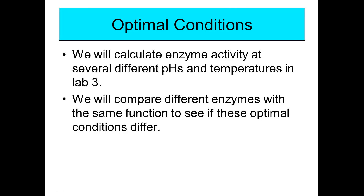Besides calculating unit activity, in lab three we determine the optimal conditions for the enzyme. We calculate the enzyme's activity at several different pHs — 5, 6, 7, 8, and 9 — and figure out which produces the most product. We do the same with different temperatures to find which allows the same amount of enzyme to make the most product. You can then compare different enzymes with the same function — such as the licheniformis enzyme versus the porcine enzyme or the enzyme from rice (Oryza) — to see if optimal conditions differ.